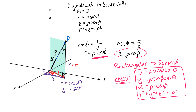These conversion formulas have a lot of angles — phi, theta, sines, and cosines — so it's easy to mix them up. It's easier to just memorize them rather than reconstruct the triangles every time. It will be important that you know the conversion formulas from rectangular to spherical coordinates.